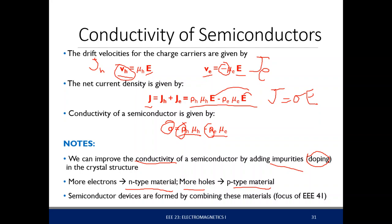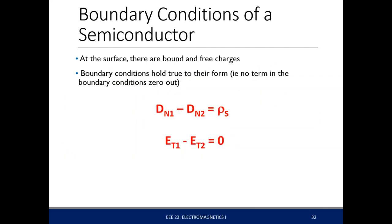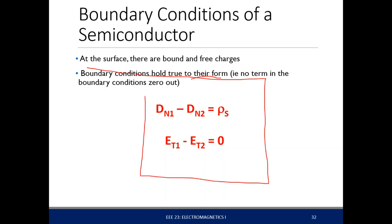The boundary conditions for a semiconductor: at the surface there are bound and free charges. The boundary conditions hold in their standard form with no alterations. If there is a charge density at the boundary, the electric flux behaves accordingly, and the tangential electric field follows as well.